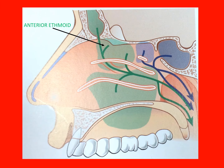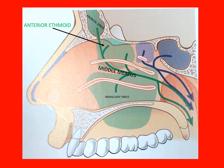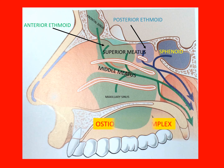Finally, a word about the drainage of the ethmoid sinuses. The anterior and middle ethmoid air cells drain into the middle meatus, along with the frontal and maxillary sinus, while the posterior ethmoid cells drain into the superior meatus along with the sphenoid sinus. The ostiomeatal complex refers to an area in the middle meatus which links the frontal, maxillary, and the anterior and middle ethmoidal cells.